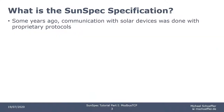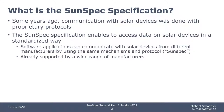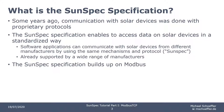Even though the second part gives an introduction to SunSpec, I want to explain at least some basic aspects about the SunSpec specification. Some years ago, communication with solar devices was done with proprietary protocols. If you had devices of different manufacturers, you had to use different communication mechanisms for each manufacturer to retrieve the same type of data. The SunSpec specification enables accessing data on solar devices in a more standardized way. If SunSpec is supported, software applications can communicate with solar devices from different manufacturers using the same mechanisms and protocol. It's already supported by many manufacturers, and my own two-year-old rooftop installation has two devices with SunSpec support. The SunSpec communication part builds on Modbus, so you need some basic knowledge about Modbus.